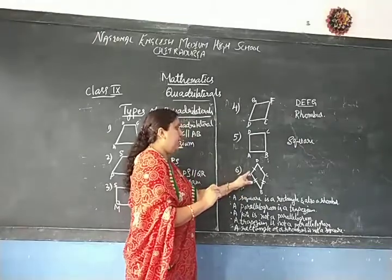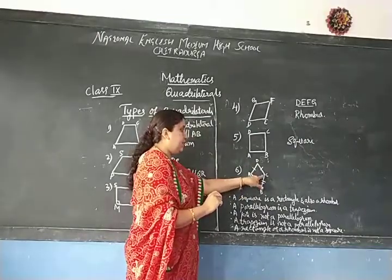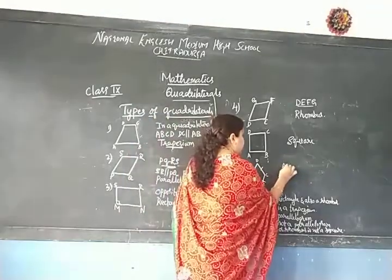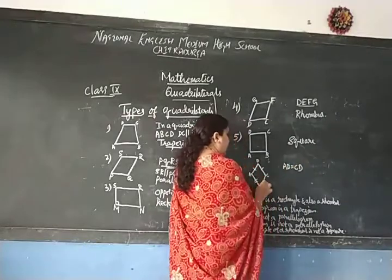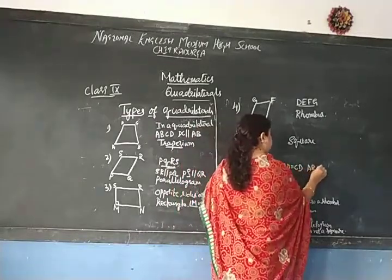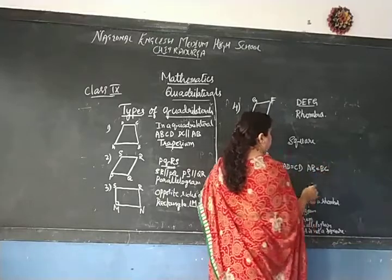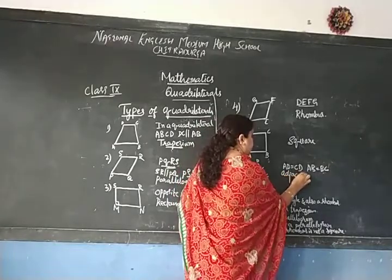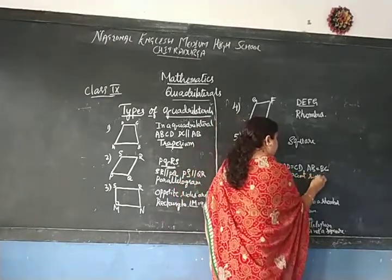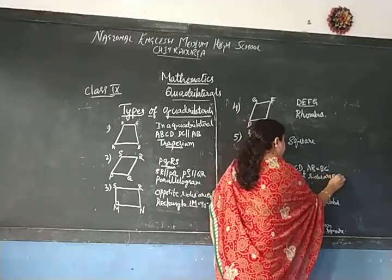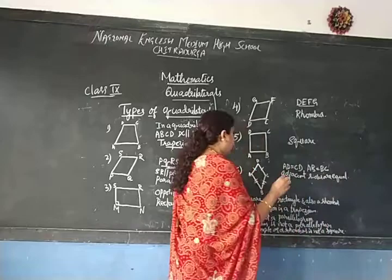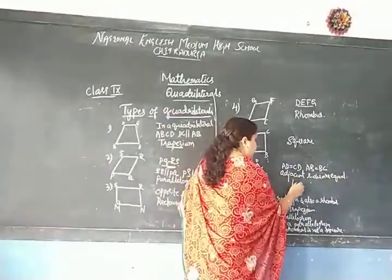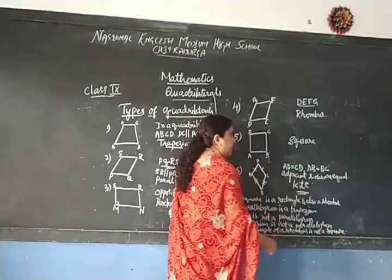Now, look at figure six. Here, AD is adjacent to CD, meaning AD is equal to CD and AB is equal to BC. Only the adjacent sides are equal. This is not a parallelogram — it is a kite.